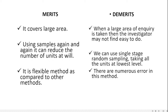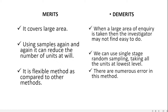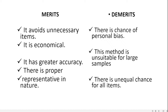The last method is purposive sampling. Purposive sampling selects items which are required for the purpose of sampling. It is also called non-probability or subjective sampling. Here the selector judges the item of sampling, so it is also called judgment sampling.